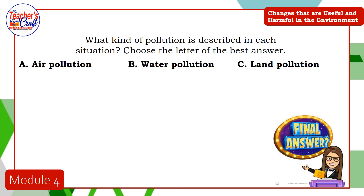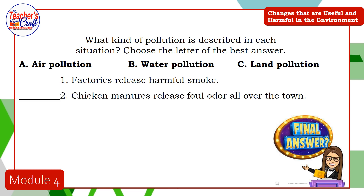Next activity: what kind of pollution is described in each situation? Choose the letter of the best answer. Your choices are: A — air pollution, B — water pollution, or C — land pollution. Number one: factories release harmful smoke. Correct, this is letter A. Number two: chicken manures release foul odor all over the town. Very good, this is also letter A.